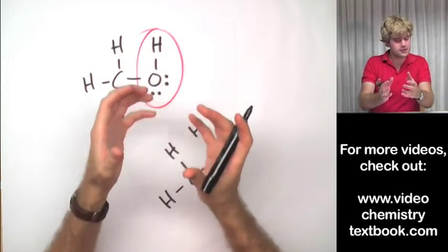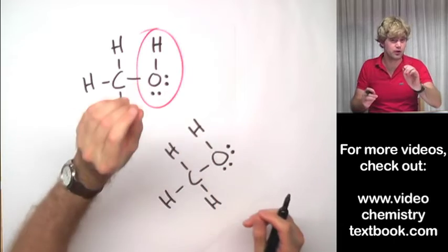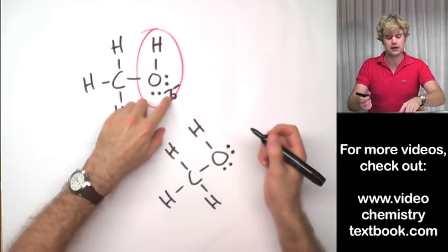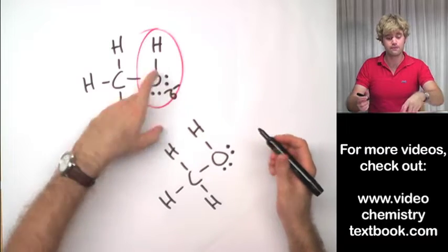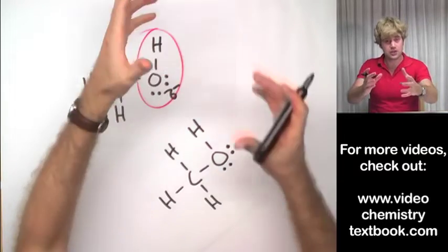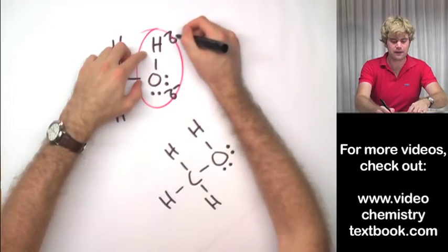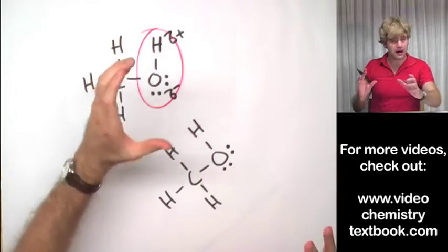So because it's hogging those electrons it gets a little bit of a negative charge. And so we can show that little bit of a negative charge with this lower case delta sign with a negative. And since it's hogging the electrons away from the hydrogen, the hydrogen gets a little bit of a positive charge.